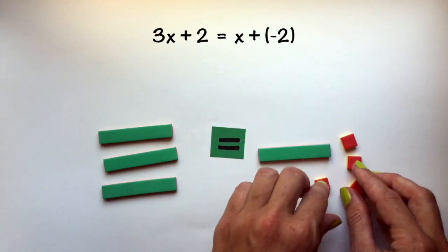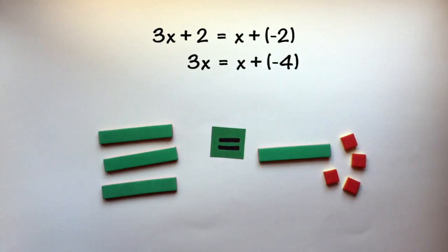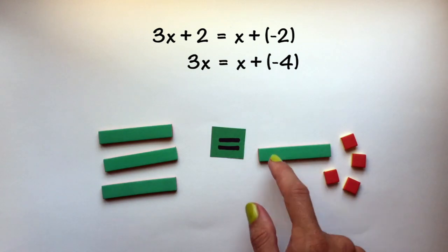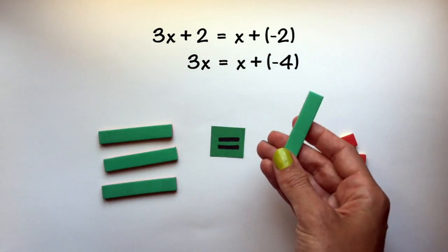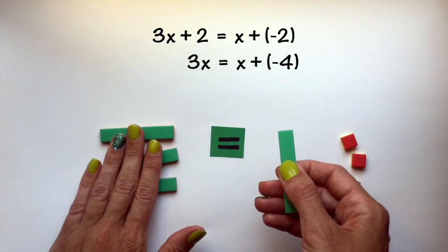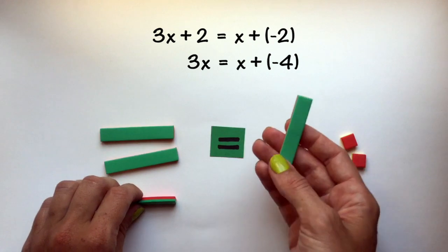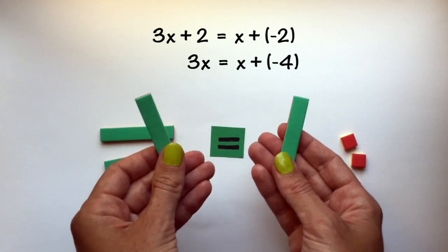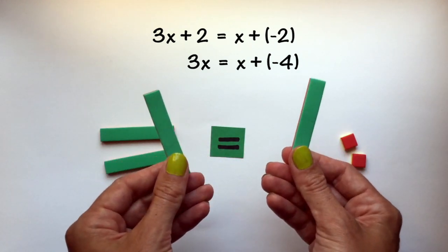I now have 3x equals x plus negative 4. And I need to remove the x from this side of my equation in order to have my variables only isolated on one side. If I'm removing it from this side, I need to remove it from this side in order to keep my equation balanced.